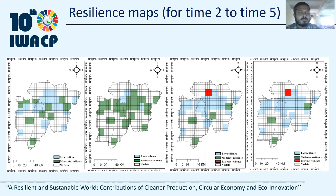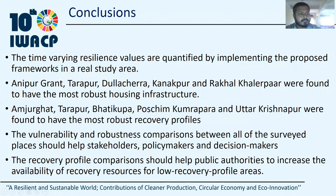These are the resilience maps for time periods two to five. The resilience map for time six is not developed as it is identical to time period five. Places including Anipur Grand, Tarapur, Dulachara, Kanekpur, and Rakhal Kharapra in Barak Valley were found to have the most robust housing infrastructure.